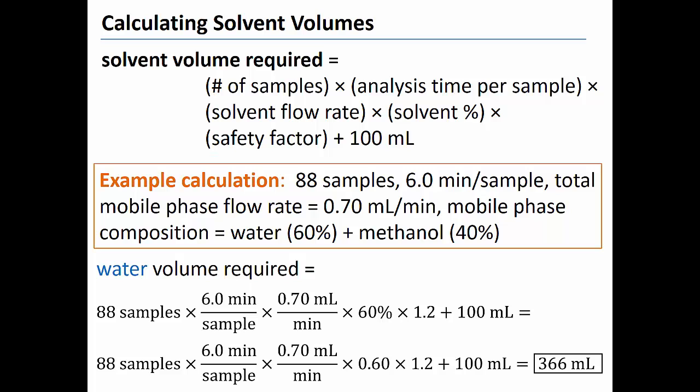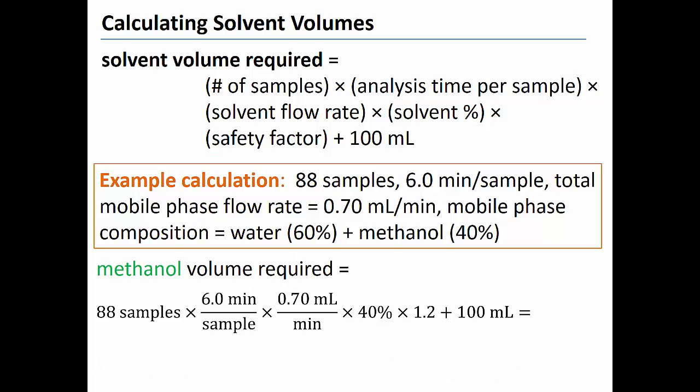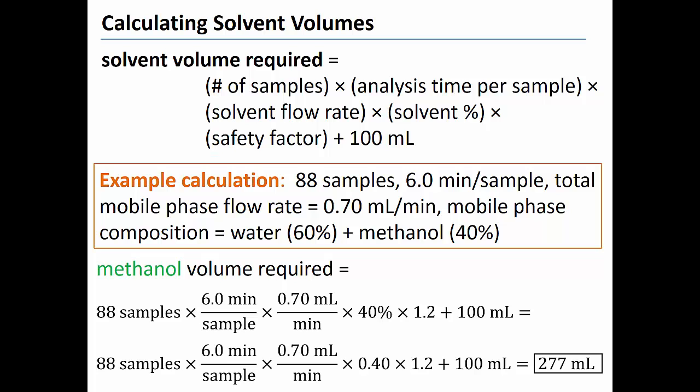If we repeat the calculation for methanol, we find that 277 milliliters of methanol should be present in the methanol bottle before we start the analysis. I should caution that additional solvent volume is typically needed in order to equilibrate the column prior to injecting any samples.